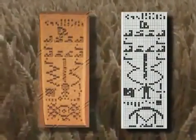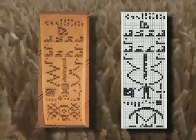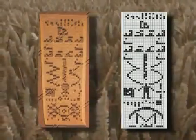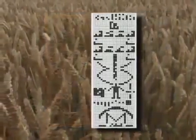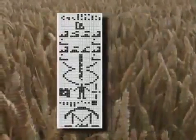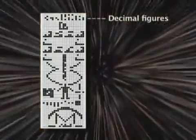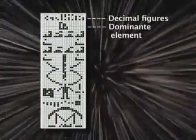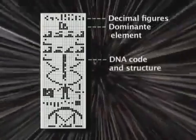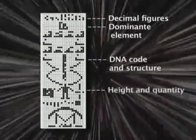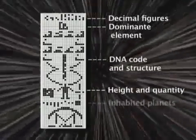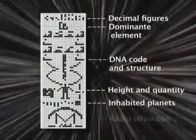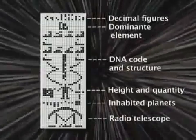On closer inspection, the code contained some fundamental differences. Sagan's original message explained our calculation system, the dominant chemical substances within the elements that create life on Earth, our DNA code, human height and quantity, and that we live on the third planet in our solar system — and lastly, a sketch of our radio telescope.